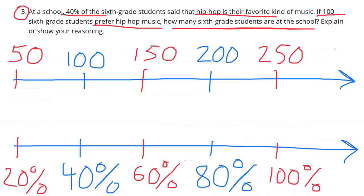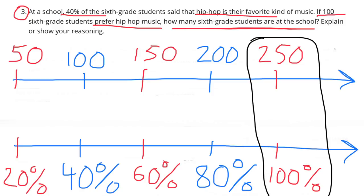So we have: 50, 100, 150, 200, 250 on top, and 20%, 40%, 60%, 80%, 100% on the bottom. At 100% on the bottom far right, if you look directly above it, you'll see 250. So there are 250 6th graders at the school.